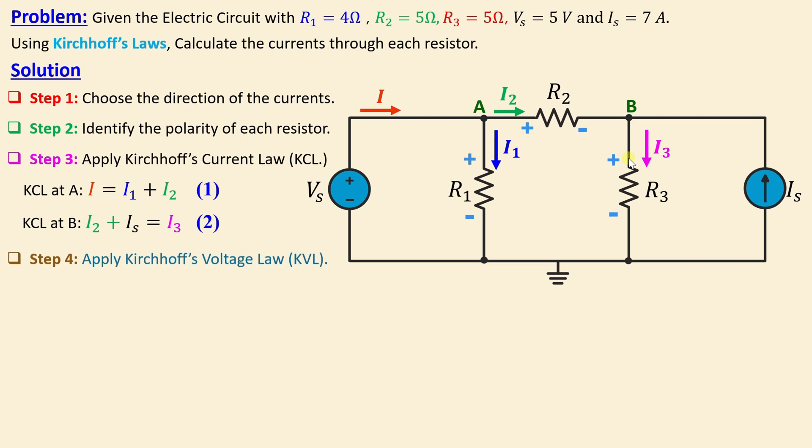we go to step number 4 is to apply Kirchhoff's voltage law. Before we start, we can choose first the different loops we are going to use. This is loop number 1, this is loop number 2.